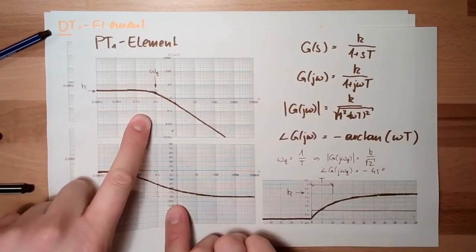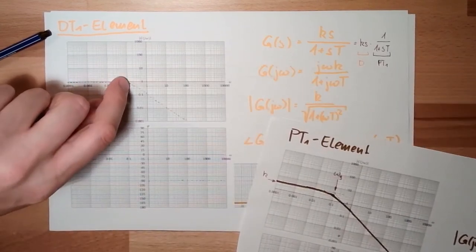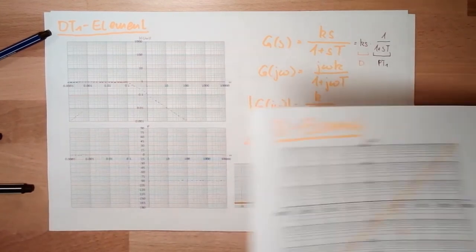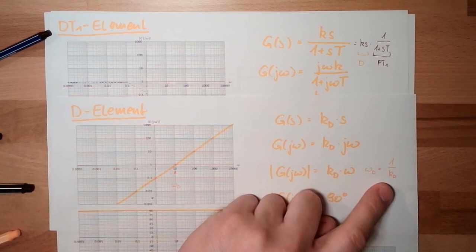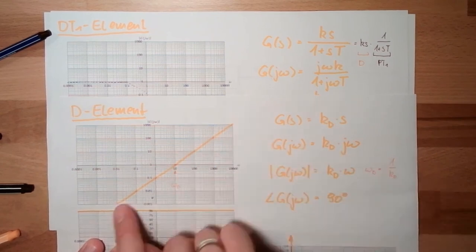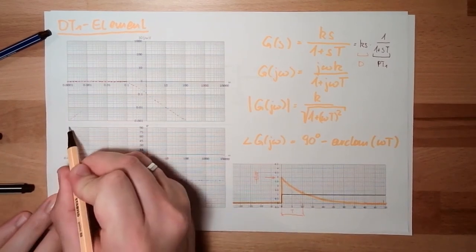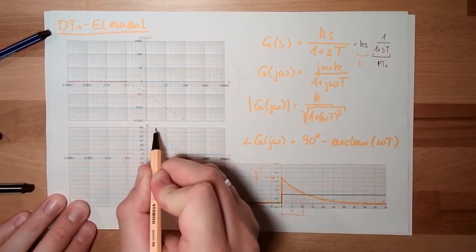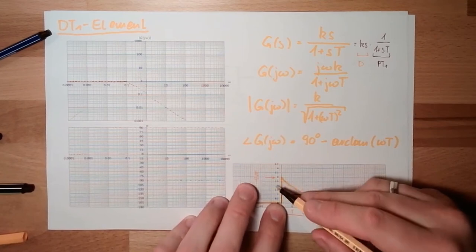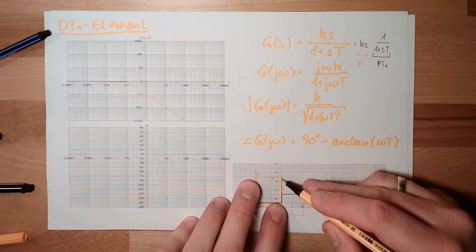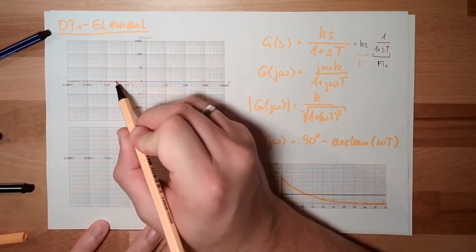For the D element, recall that omega_g equals 1/K_D, and the line rises straight with always 90 degrees phase. In our example, if T=10 then K/T must equal 3, so K=30. Therefore 1/30 = 0.03, and the D element line passes through at around 0.03 on the frequency axis.